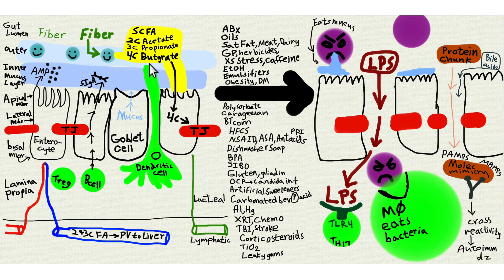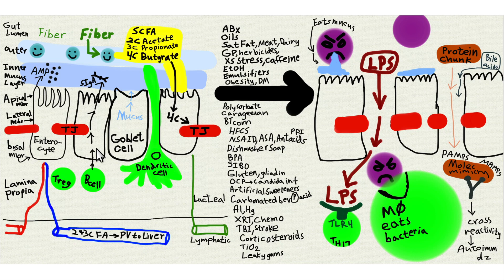The most important short-chain fatty acid is butyrate — the 4-carbon SCFA made by gut bacteria from fiber. Butyrate provides more than two-thirds of the energy used by gut lining cells to stay healthy and maintain tight junctions. Dietary fiber is used to make and maintain the tight junctions of your intestinal lining. The biggest problem causing leaky gut is a lack of dietary fiber. If you want a healthy gut, eat dietary fiber.